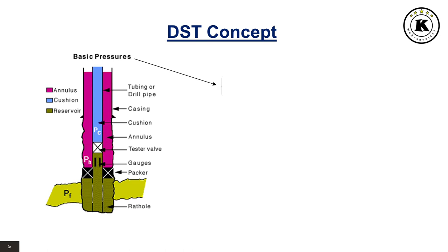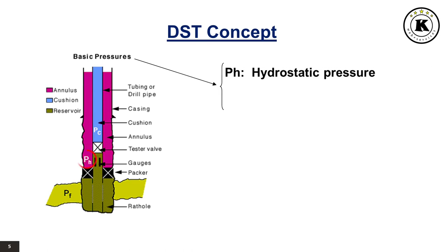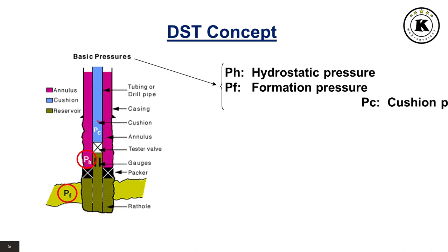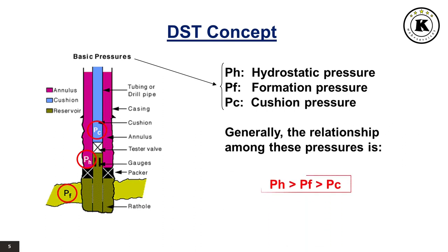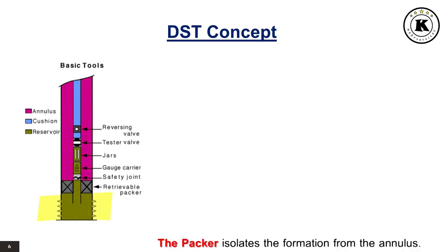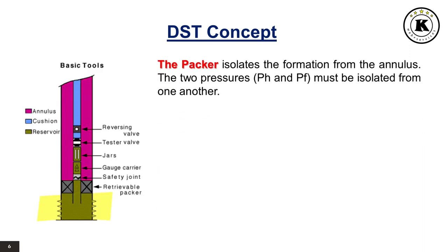The three basic pressures involved in a DST are the hydrostatic pressure pH, the formation pressure PF, and the cushion pressure PC. Generally, the relationship among these pressures is: pH greater than PF, and PF greater than PC. The packer isolates the formation from the annulus, and the two pressures, pH and PF, must be isolated from one another.